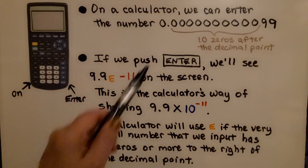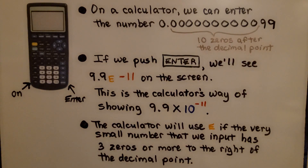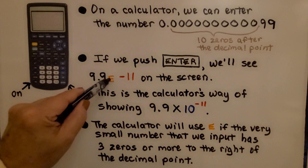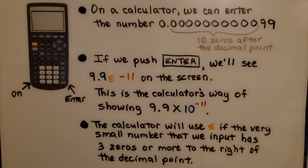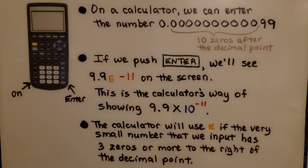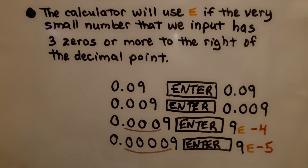On a calculator, we can enter the number 0 point, then 10 zeros, then 99. If we push enter, we'll see 9.9 with a capital E and a negative 11 on the screen. This is the calculator's way of showing 9.9 times 10 to the negative 11th power. The calculator will use E if the very small number we input has three zeros or more to the right of the decimal point.